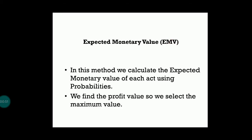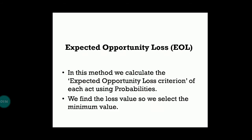In the EMV method, we calculate the monetary value of each act using probabilities that are given — we don't have to calculate the probabilities ourselves, they will already be given in the question. We find the profit value and select the maximum. In Expected Monetary Value we go for the maximum value.